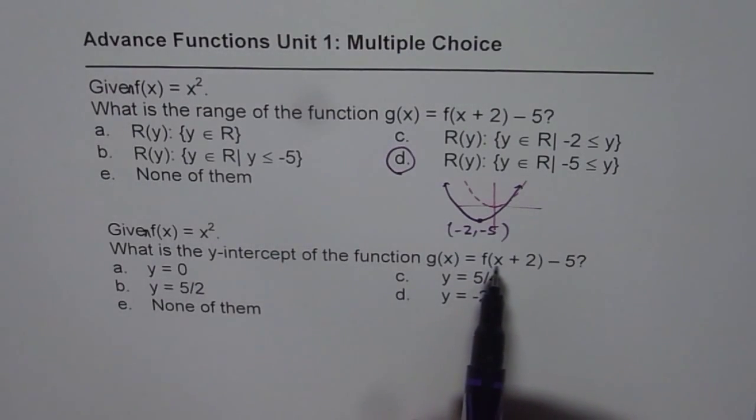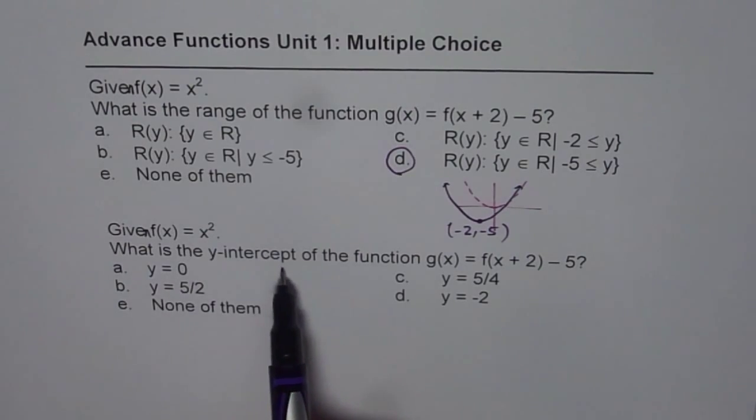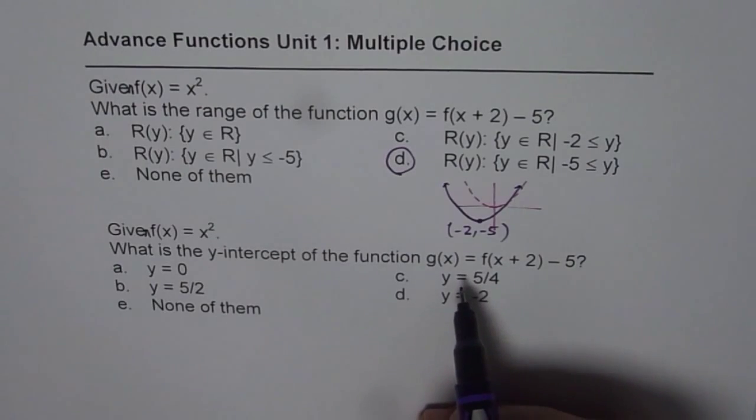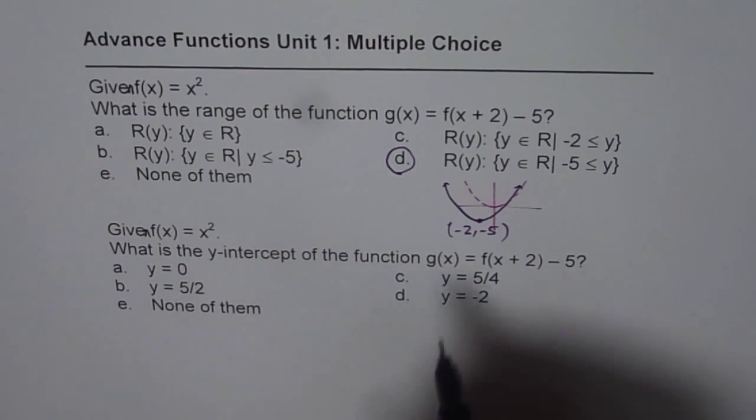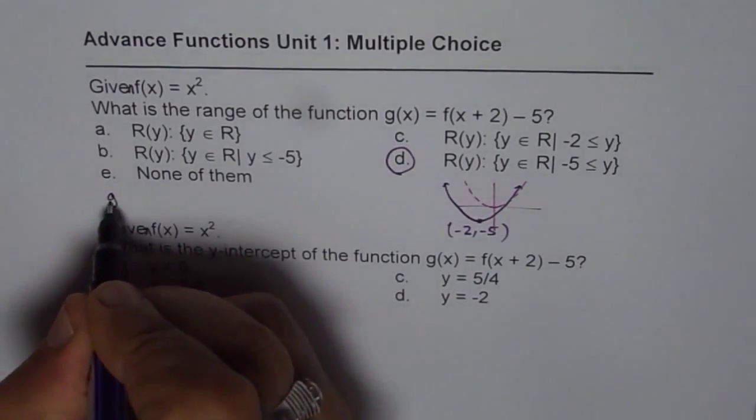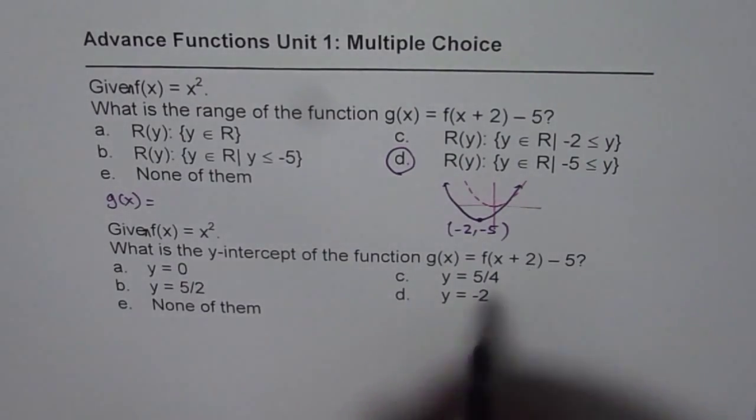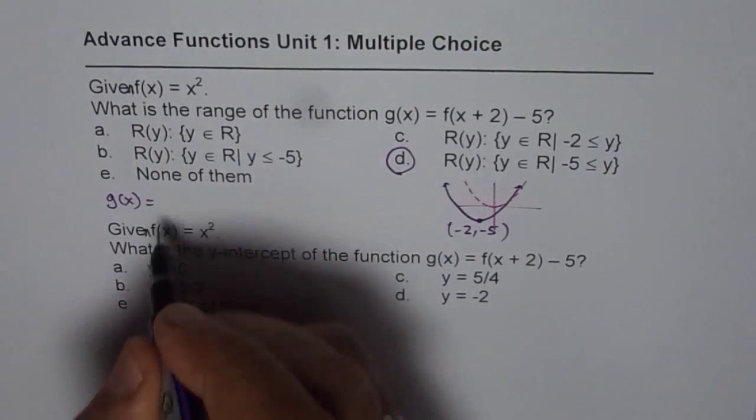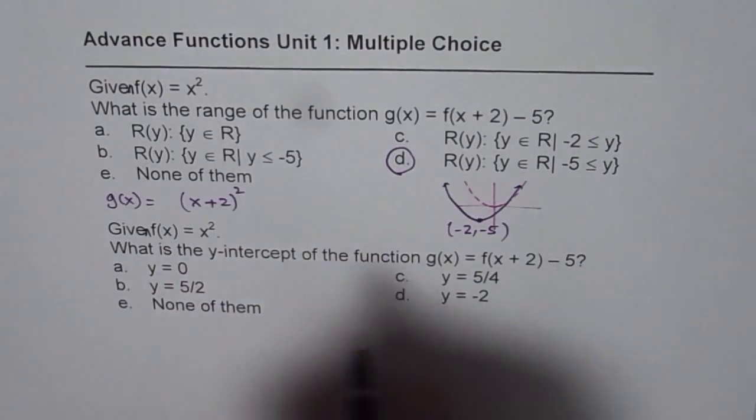Now, let's get back to the second part of this. Given f(x) = x², what is the y-intercept of this function? Now, to find the y-intercept, we can actually write down the function. So, the function will be g(x) = f(x + 2). That means, replace x with x + 2. So, we get (x + 2)² - 5.